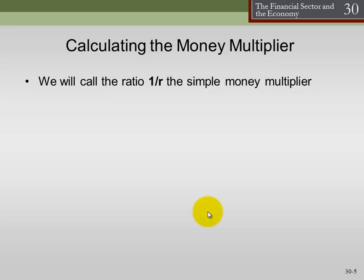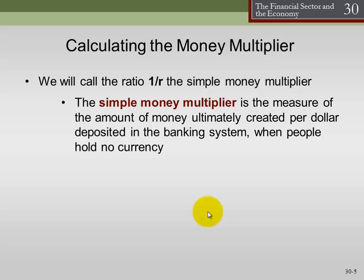To calculate the simple multiplier model, the money multiplier is simply 1 over the reserve ratio. The simple money multiplier is a measure of the amount of money ultimately created per dollar deposited in the banking system. There is a problem with this simple model: it doesn't account for the fact that the general public also holds currency. Here we're assuming a zero currency ratio, which is obviously a simplification, but it works for now.